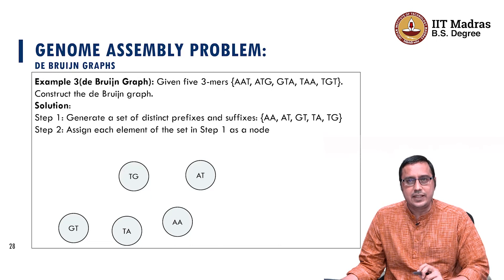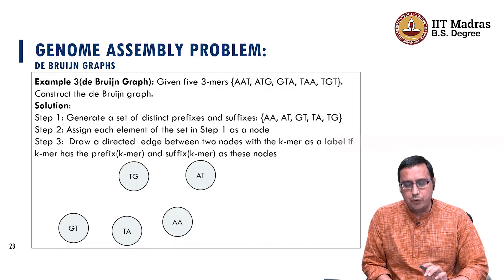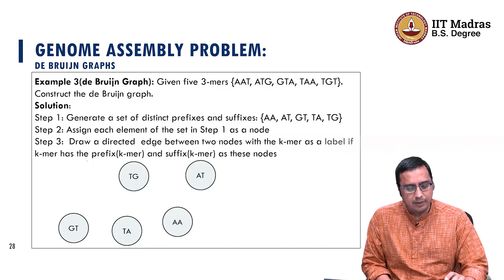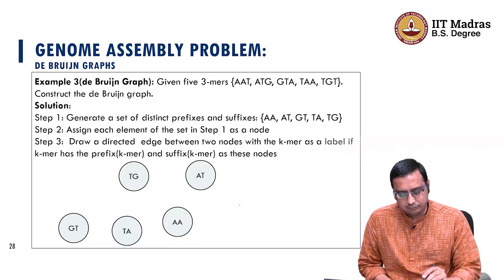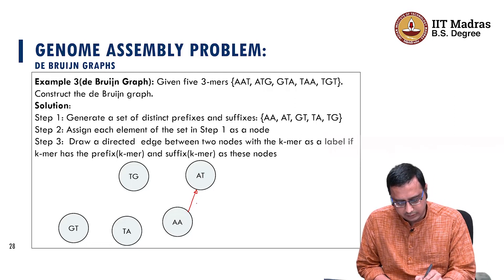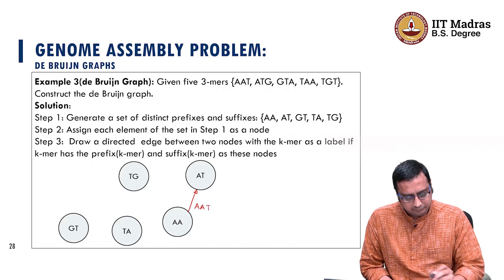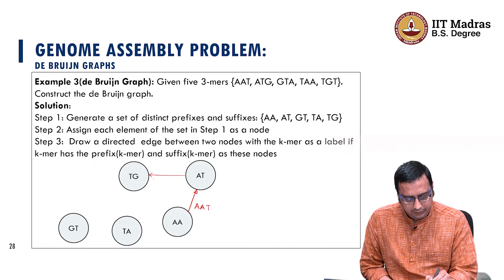Once we have the nodes, as discussed, in the De Bruijn graph we draw a directed edge between two nodes labeled with the K-mer, if that K-mer has the first node as its prefix and the second node as its suffix. For AAT, the prefix is AA and suffix is AT, so we draw an edge from AA to AT labeled AAT. Similarly, for ATG, we draw an edge from AT to TG labeled ATG.